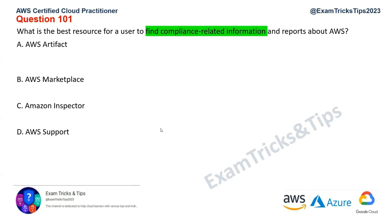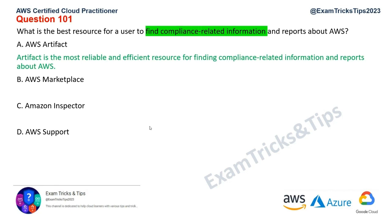The keyword here is we need to find compliance-related information. If you need to find compliance-related information for AWS, we have the service for it, and that's AWS Artifact. AWS Artifact is the most reliable and efficient resource for finding compliance-related information and reports of AWS. I've worked on projects in the past where we used AWS services and for GDPR compliance, PCI compliance, or any other compliance related to a particular region, if you need anything provided to the auditors, we would just go to the AWS Artifact console, retrieve the report, and provide it to auditors. That's AWS Artifact for you.